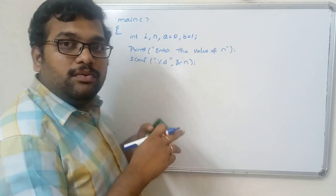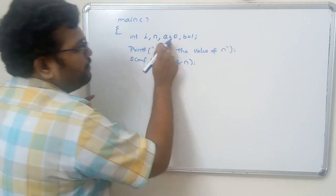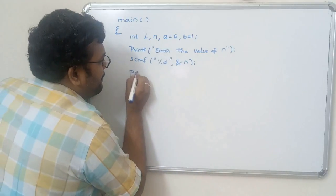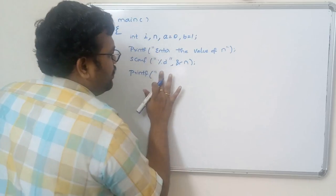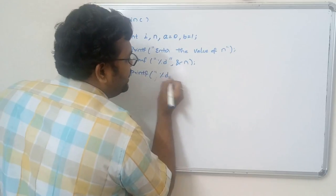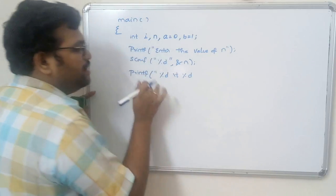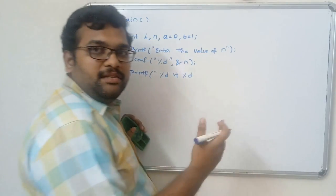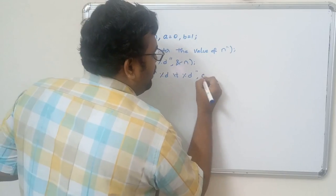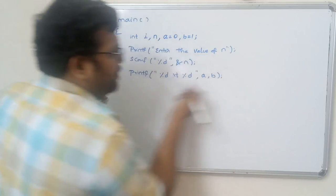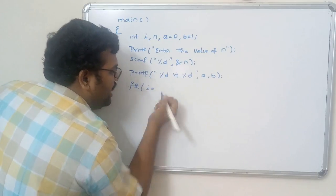First we print the first two elements using printf with format "%d\t%d", passing a and b — where \t is a horizontal tab space. This prints 0 and 1. Then we need to calculate and print the third element onward using a loop variable i.